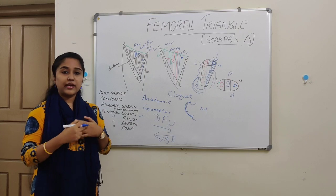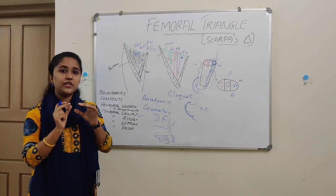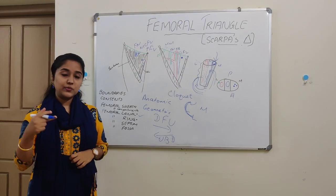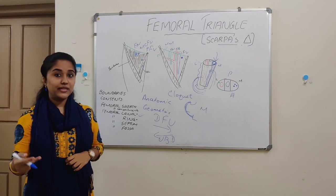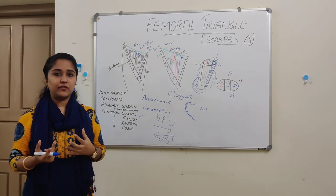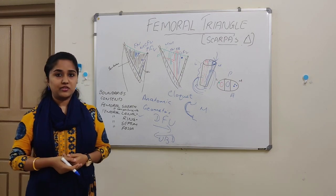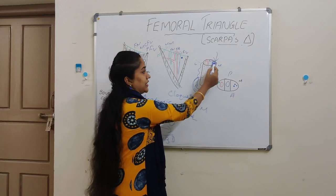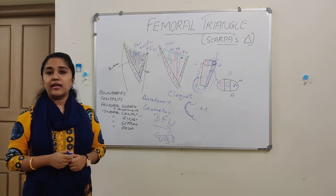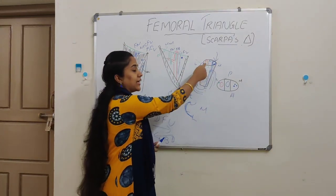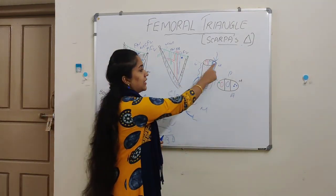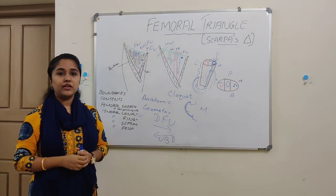In case of strangulation of the femoral hernia, the neck of the hernial sac can get strangulated at the femoral ring. To relieve this, we have to cut the lacunar ligament — which is the medial-most boundary — so that the femoral ring is enlarged. When cutting the lacunar ligament, we must be aware that an abnormal obturator artery can sometimes be found just medial to the lacunar ligament, and cutting it could lead to profuse bleeding.